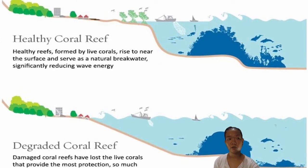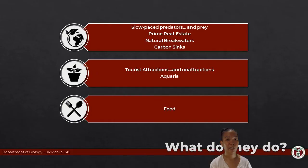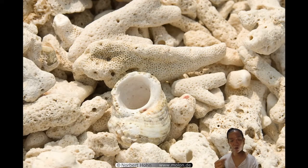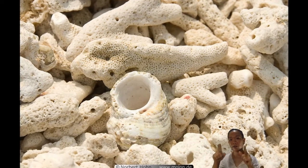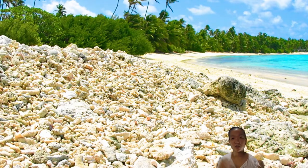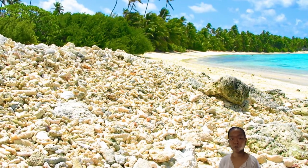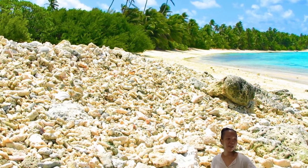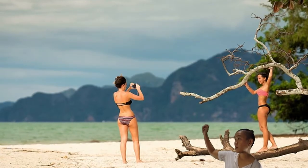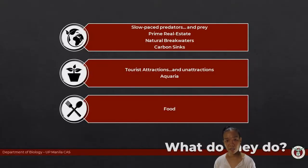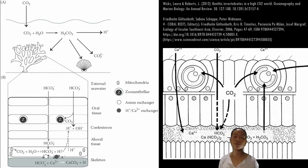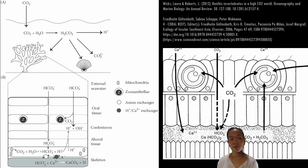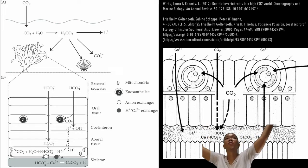If you walk on the beach, you'll notice bits and pieces of coral worn down and smoothed out — these contribute to adding sand to beaches. Calcium carbonate skeletons are calcareous and white, so white sand beaches owe their appearance to broken cnidarian skeletons. Cnidarians are also carbon sinks: they use dissolved CO2 from the water to build calcium carbonate (CaCO3) skeletons, storing carbon that would otherwise become greenhouse gases.